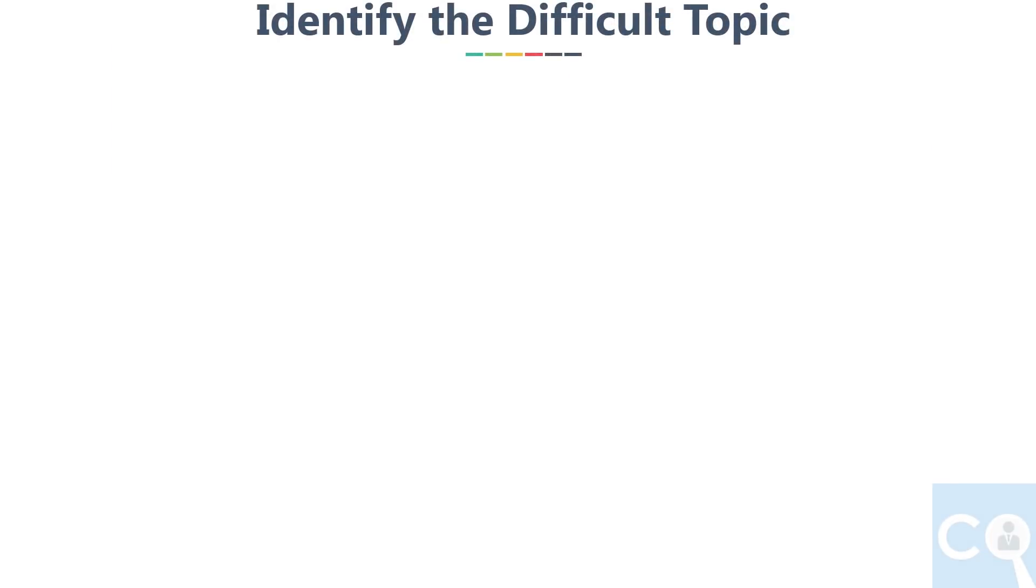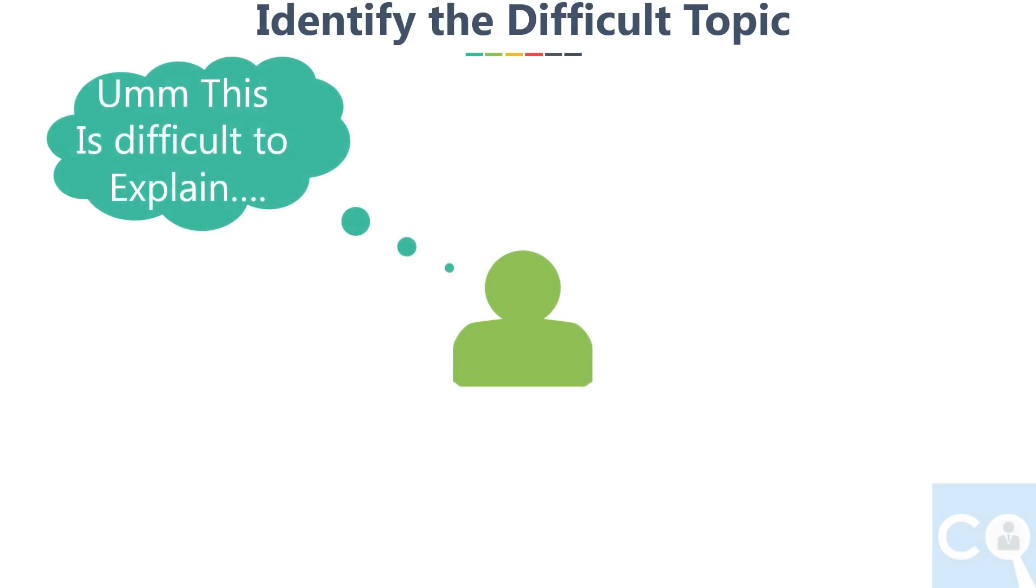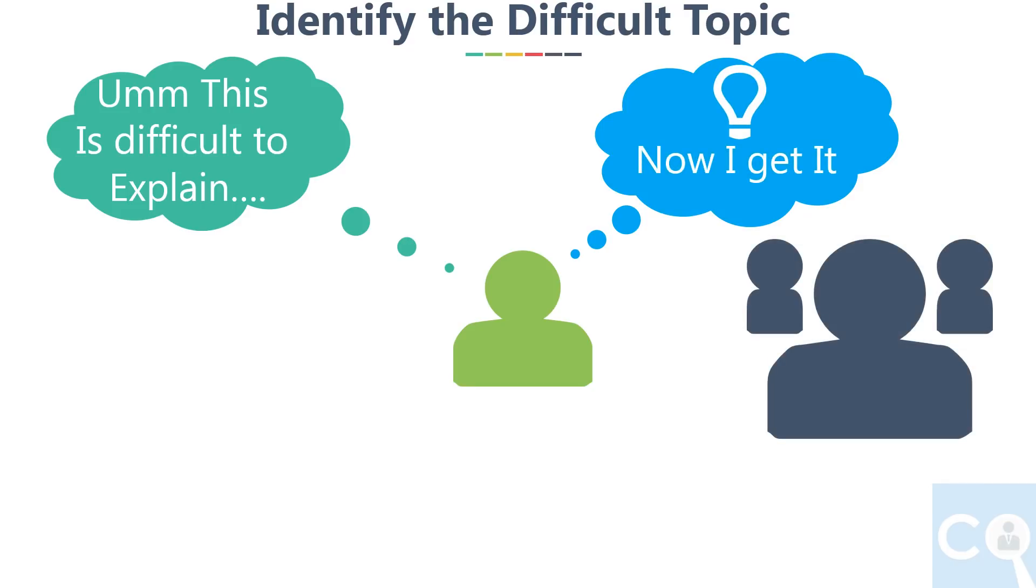Second step is, identify the points you can't explain in simple ideas. While explaining, you will obviously find some complex concepts, technical terms. Now identify these terms and try to find the way to explain them or understand them in a simple way. Try to take help of your teacher or your friends or seniors to understand the concepts further more deeply.